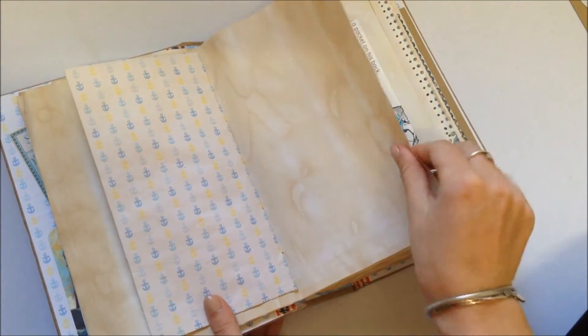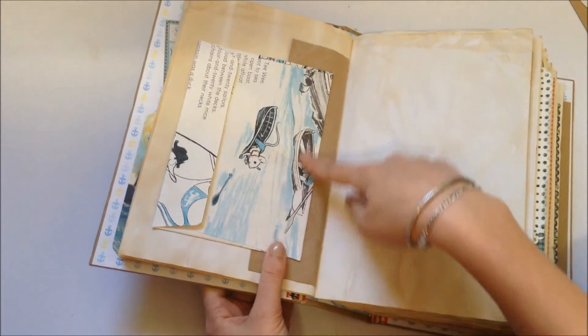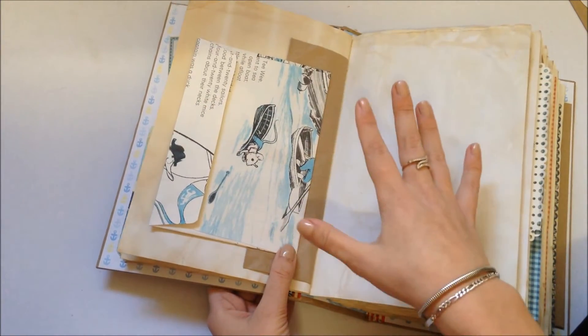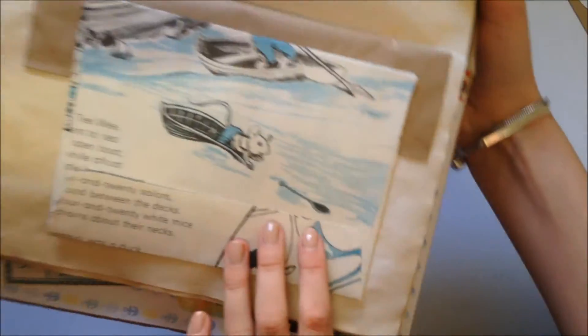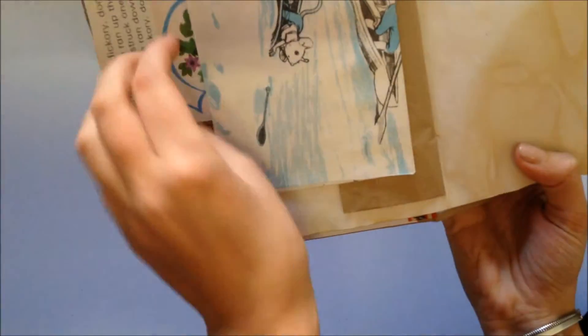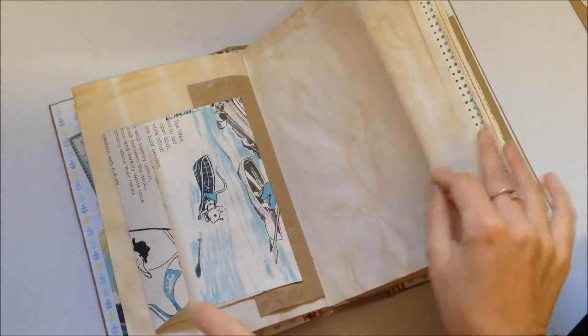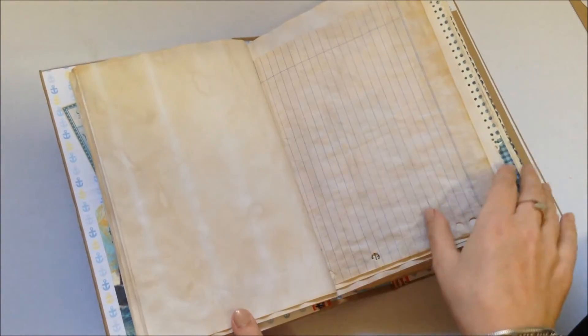And I also used some old children's book pages that had anything nautical themed on it, so I don't know if you can see, but that's mice in the ocean, on boats, which is normal. And I turned them into envelopes. So there's a few of those throughout.